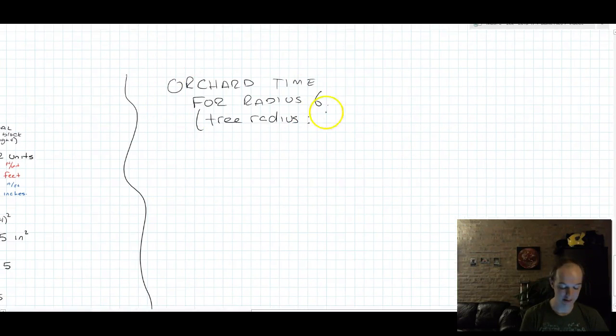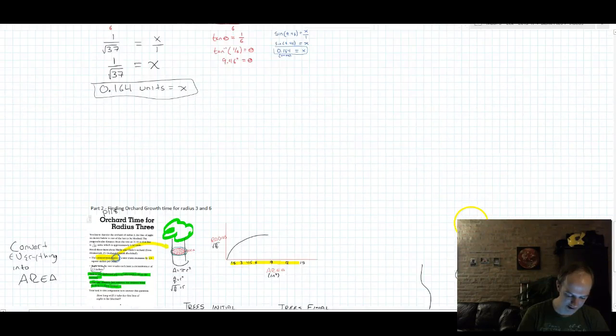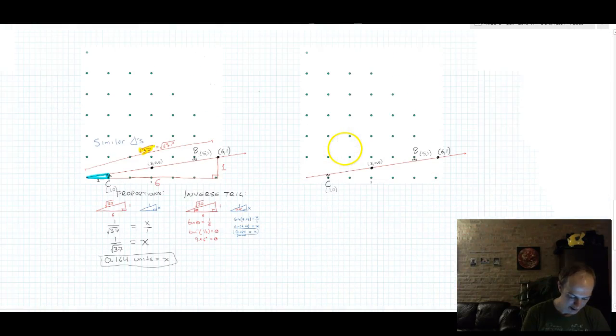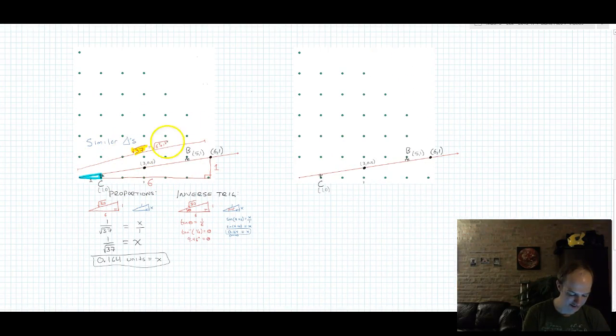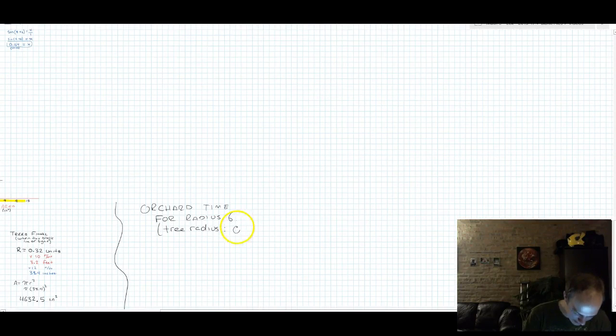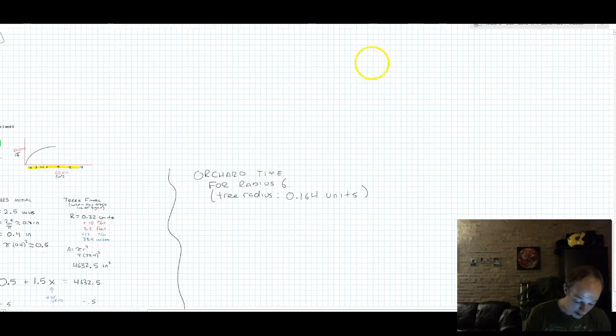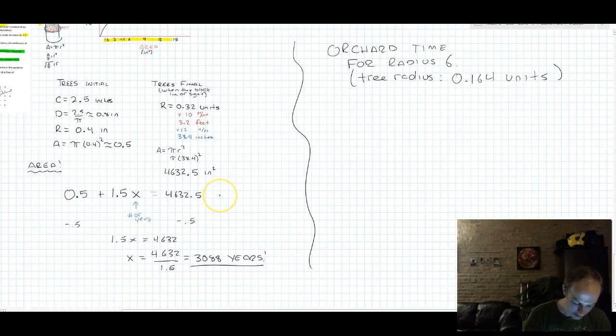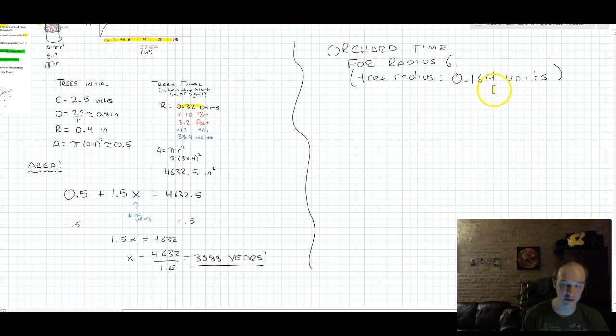Now we're going to go ahead and find the orchard time for radius six. That's an orchard of radius six. And I made a note that the tree radius, the hideout tree radius for orchard of radius six, is 0.164 units. Why is it that? Because of everything we did in the previous video. So I'm going to copy that 0.164 units. What I'm going to do, more or less, is take almost all of this work and duplicate it. The only change is that instead of 0.32 units, it's going to be 0.164 units.